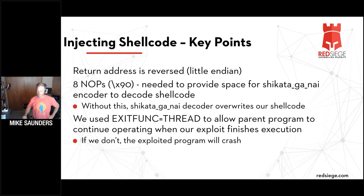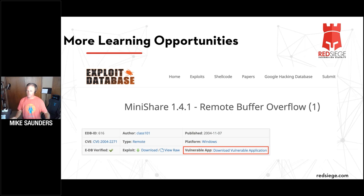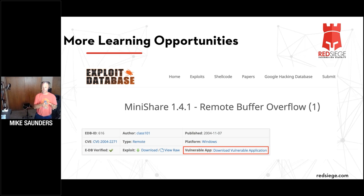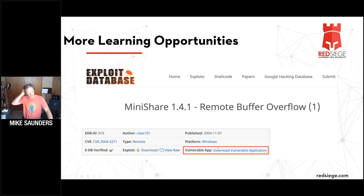You figured out VulnServer — now what? There are other programs out there. Exploit Database is a great resource. MiniShare 1.4.1 has a remote buffer overflow that works almost exactly like VulnServer — you could fuzz it almost exactly the same way, just change the command and the socket connection. You can download that vulnerable version of MiniShare, run it on your test machine, and fuzz it. There are other programs out there — 32-bit FTP is another one to test.